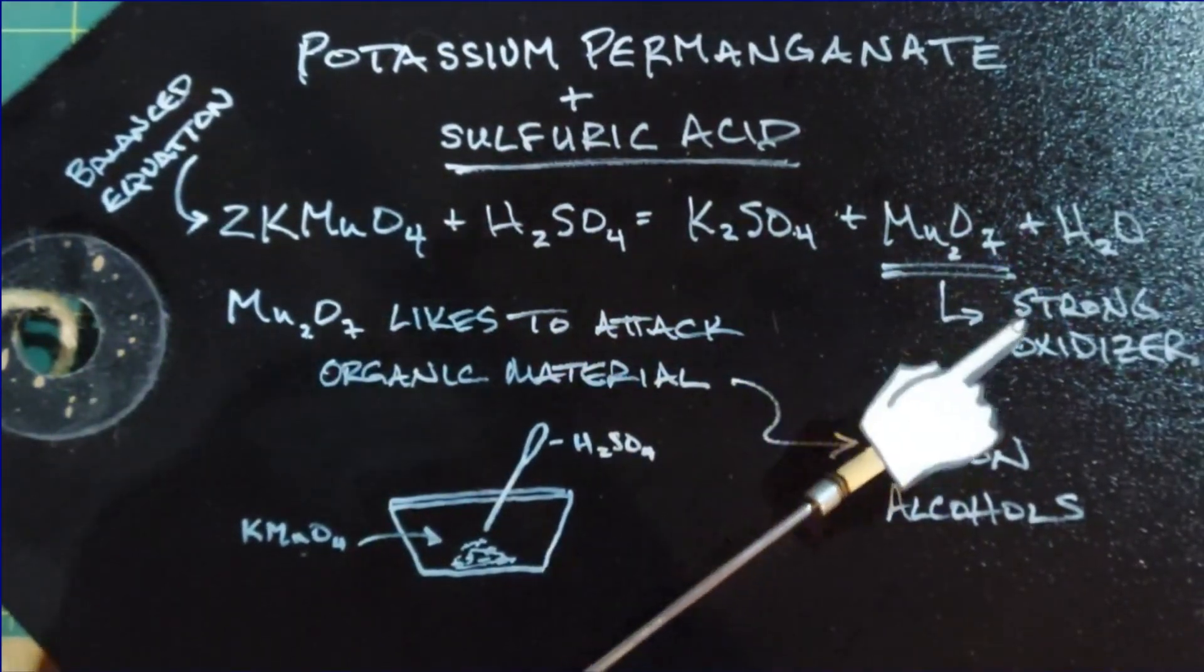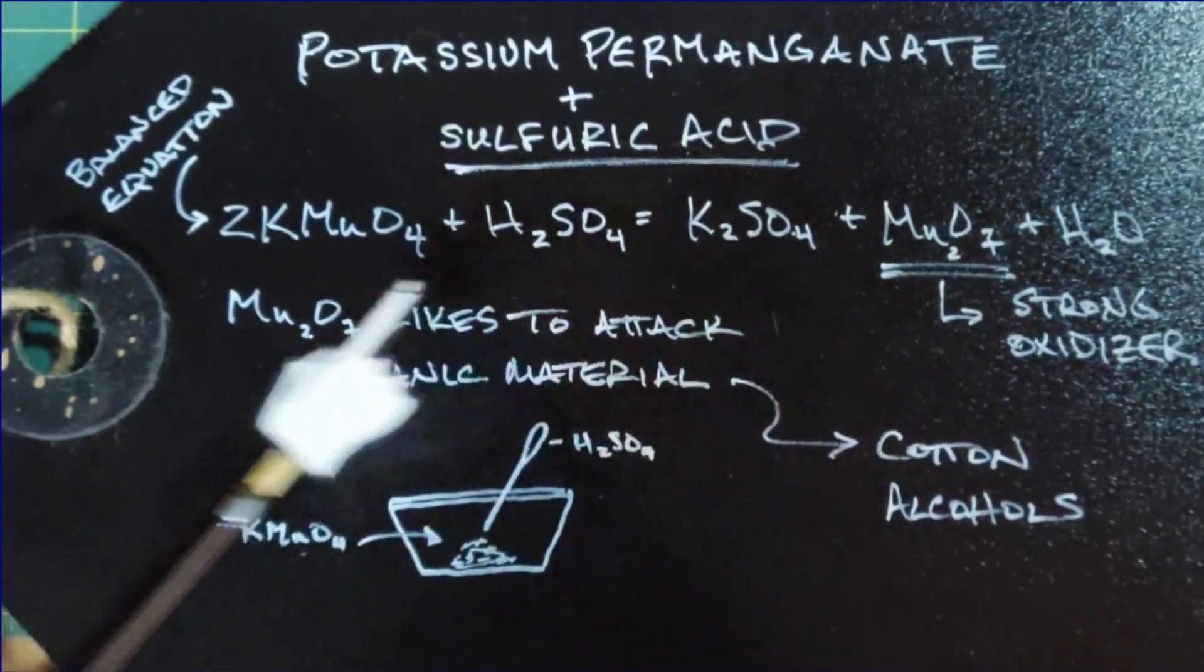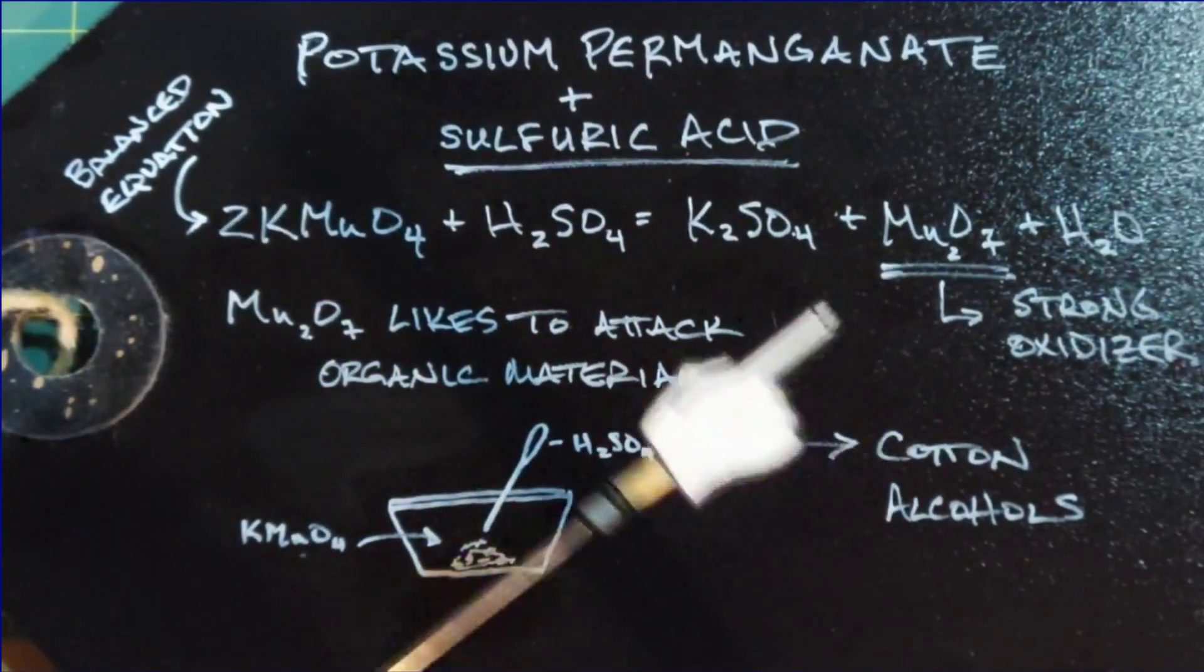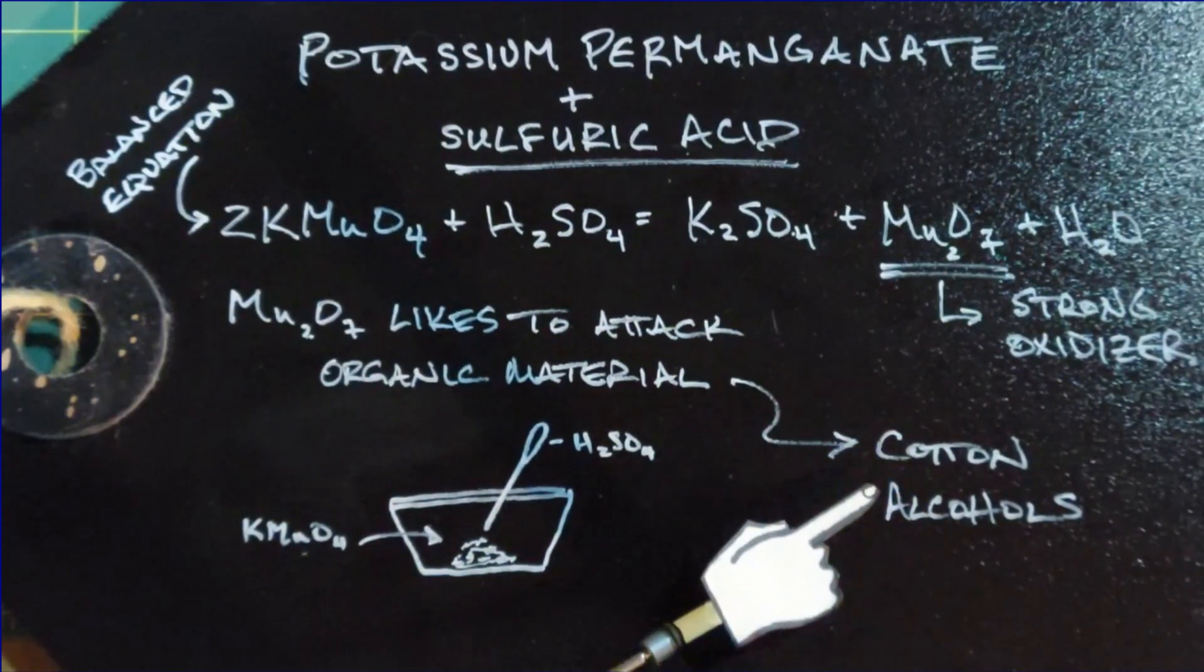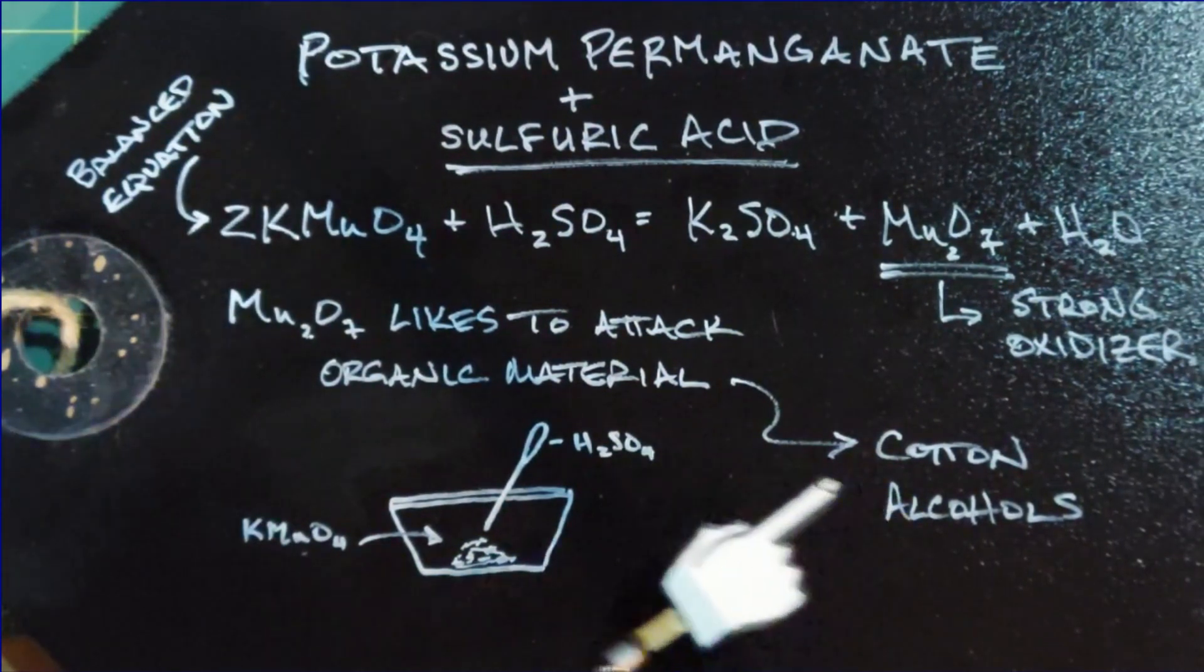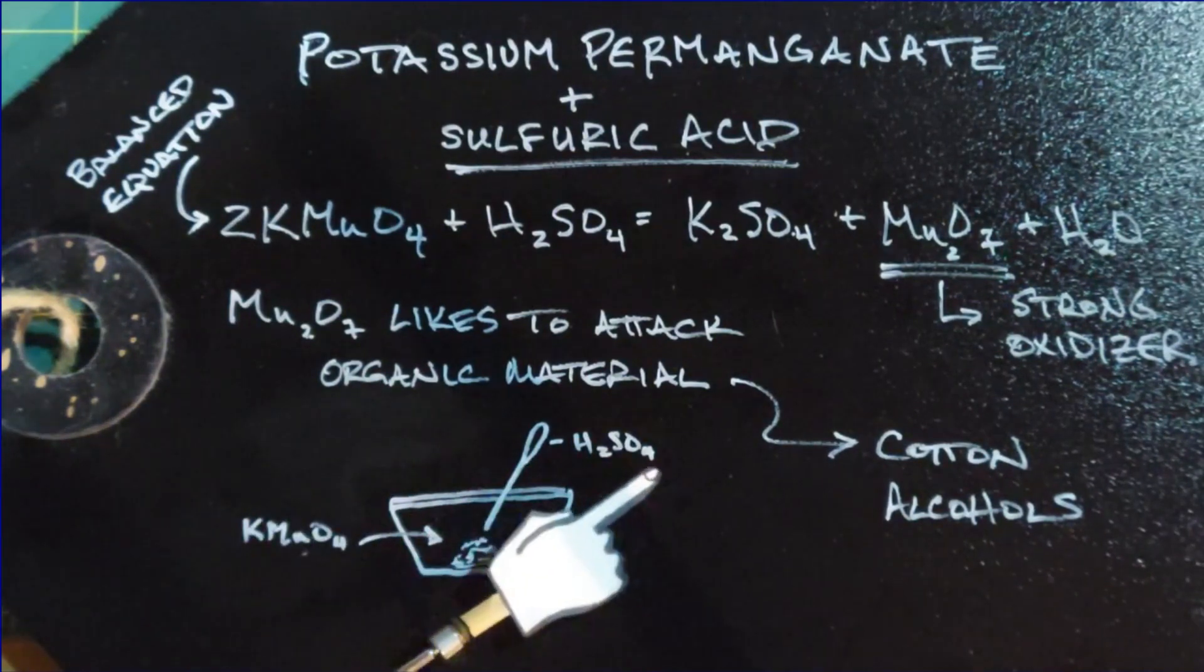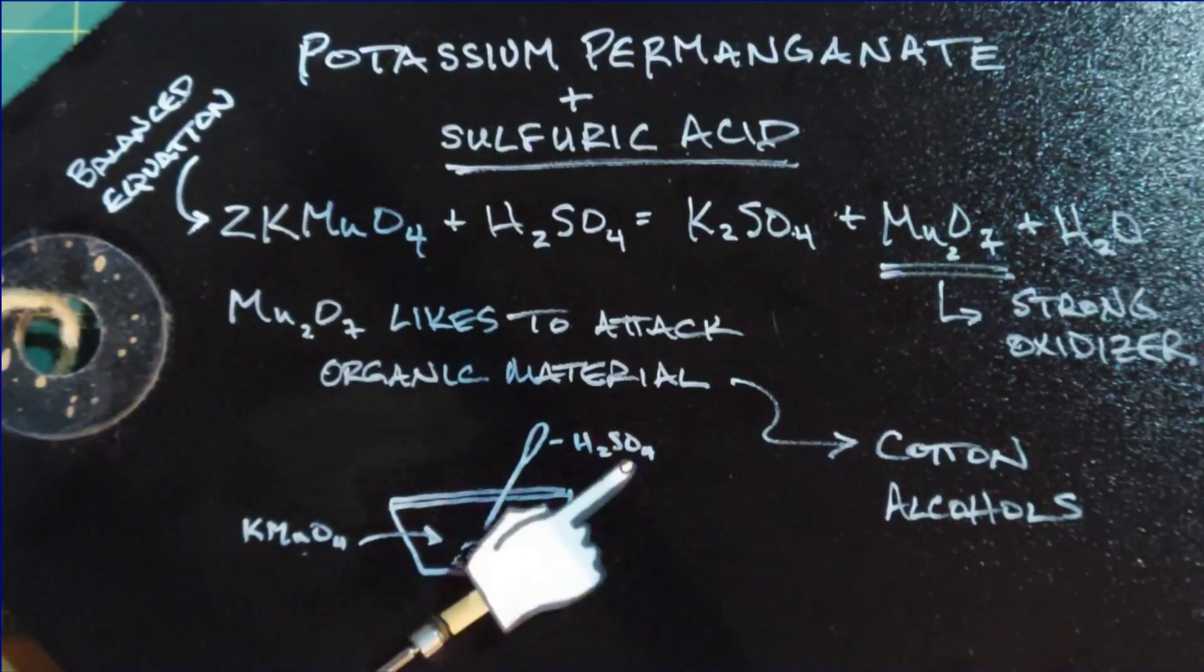Manganese heptoxide is a very strong oxidizer and it likes to attack organic material. So we're going to use cotton and we'll also use a couple different types of alcohol and see what happens when they're put in this mix of KMnO4, potassium permanganate, and H2SO4, also known as sulfuric acid.